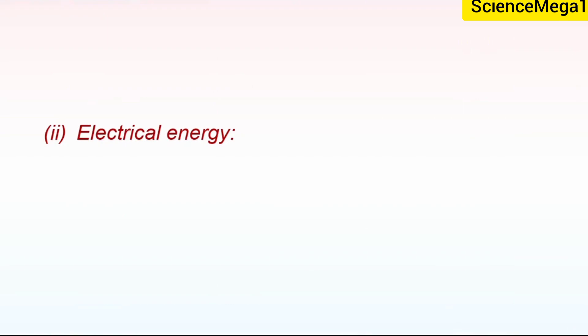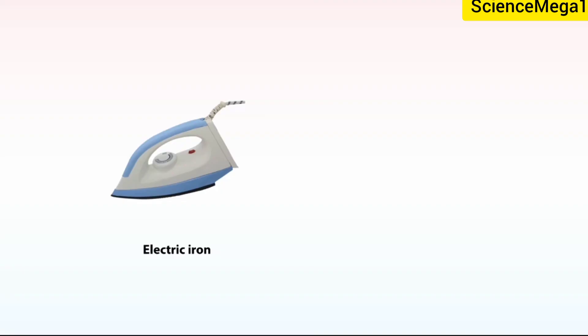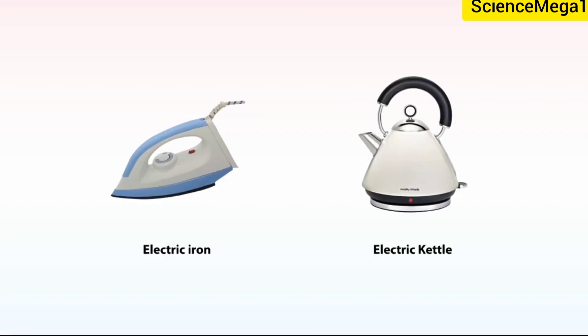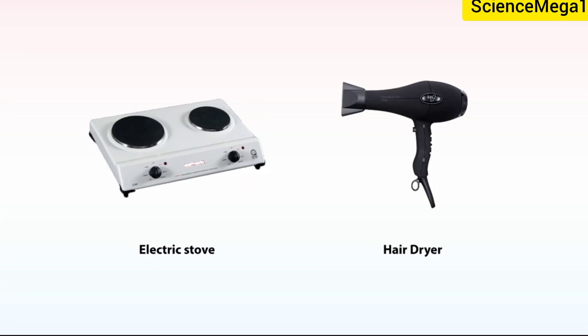Electrical energy. Let's see how electrical energy is used. Electrical energy is widely used as a source of heat. For example, it is used to operate a lot of electrical appliances, such as electric irons, kettles, stoves, and hair dryers, etc.